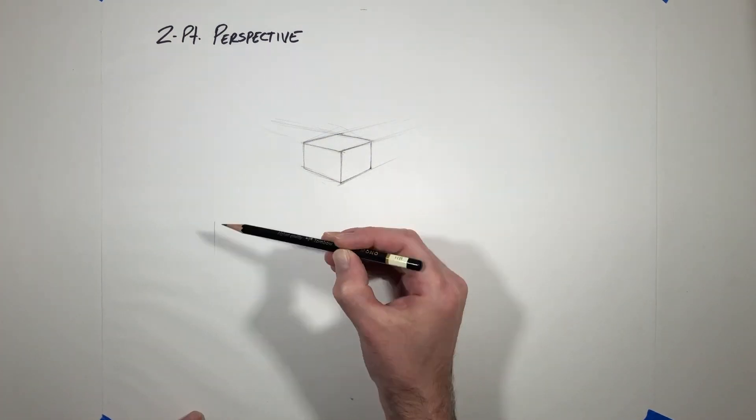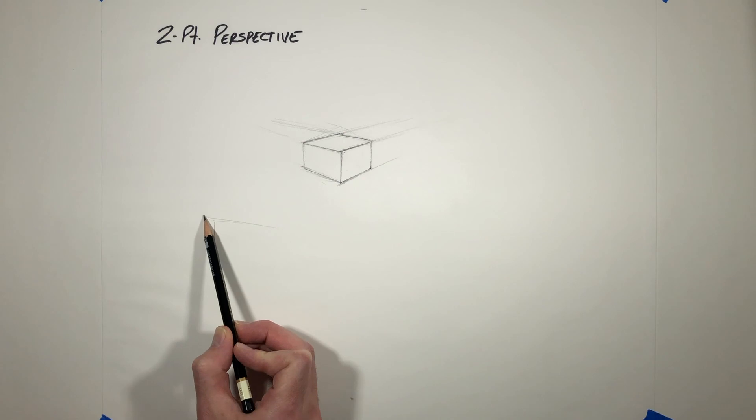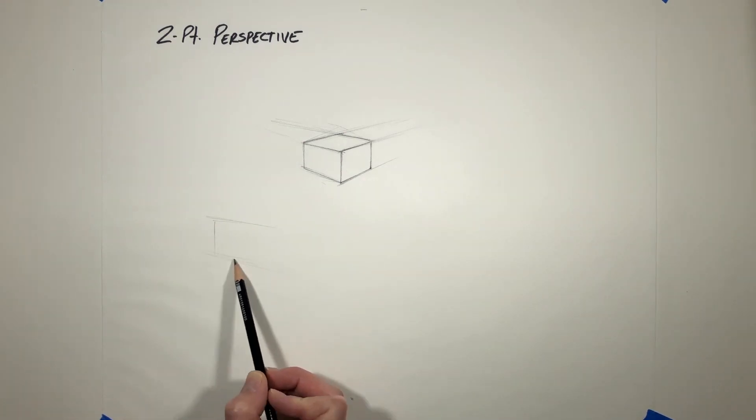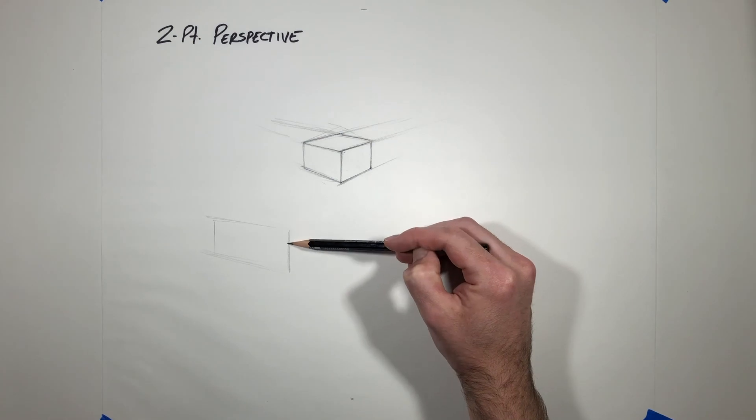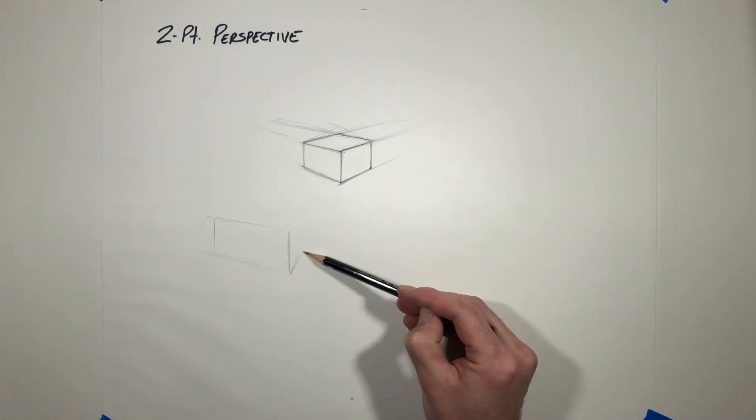So let's keep running with these ideas and we're going to build several two-point perspective cubes in space. As you do that, change up your sizing a little bit. Don't always keep the cubes exactly the same size. We can blow them up a little bit. We can change the angles really dramatically.